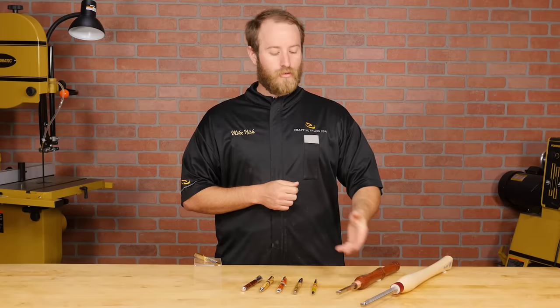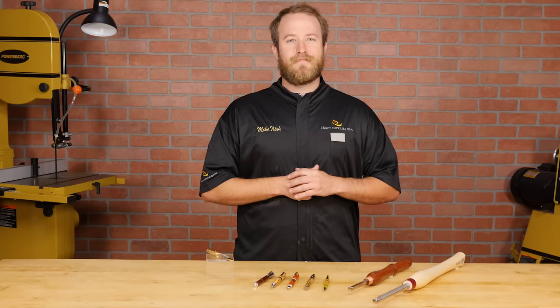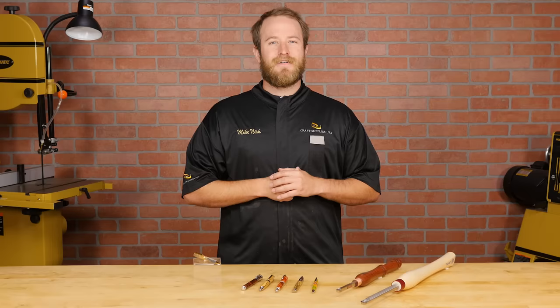Carbide insert tools offer several advantages over traditional tools. They don't require a grinder for sharpening and they're very easy to control, and the carbide cutter makes it easy to achieve a smooth surface on most materials. There are several different carbide tools on the market but for pen turning I recommend using one with a radius cutter. It's the most forgiving and easiest to use.